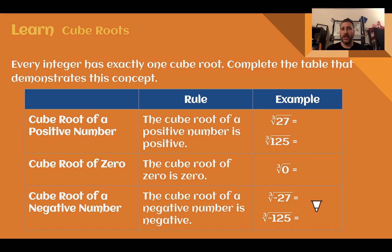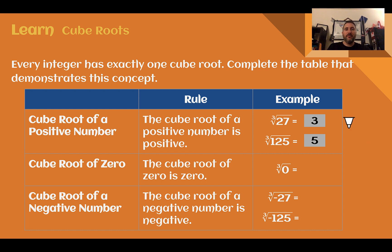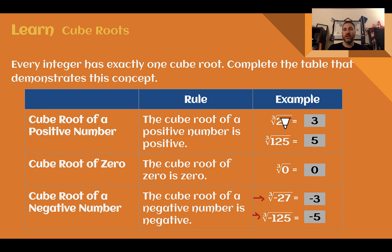For cube roots, every integer — both positive and negative numbers — has exactly one cube root. Where every positive number had two square roots, every integer can only have one cube root. The cube root of a positive number is positive: what number times the same number times the same number equals 27? That must be 3. 125 would be 5 times 5 times 5. The cube root of 0 is 0. For negatives: negative 3 times negative 3 gives positive 9, times negative 3 again gives negative 27. So the cube root of negative 27 is negative 3, and the cube root of negative 125 is negative 5. Positive stays positive, negative stays negative — each has only one answer.